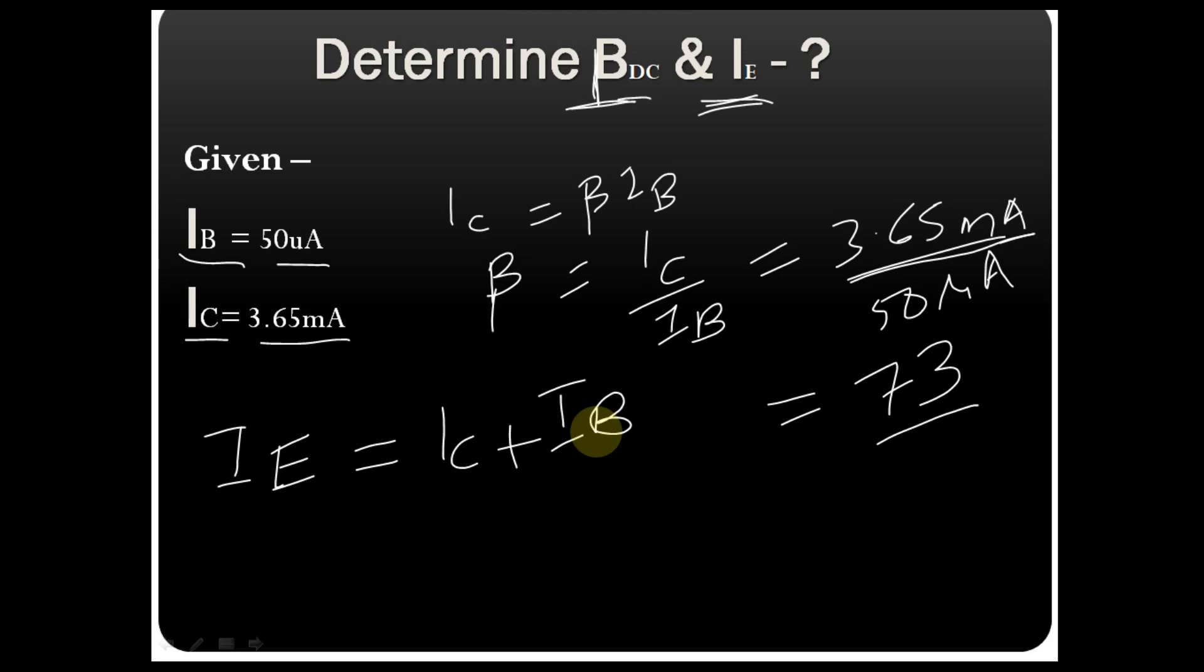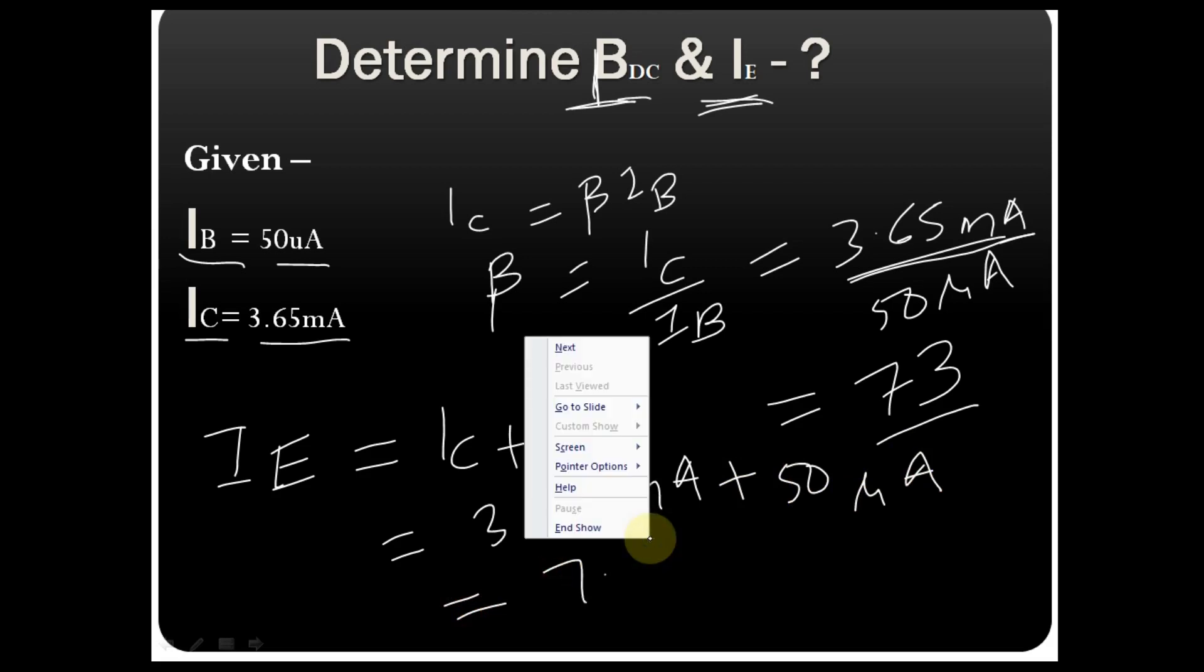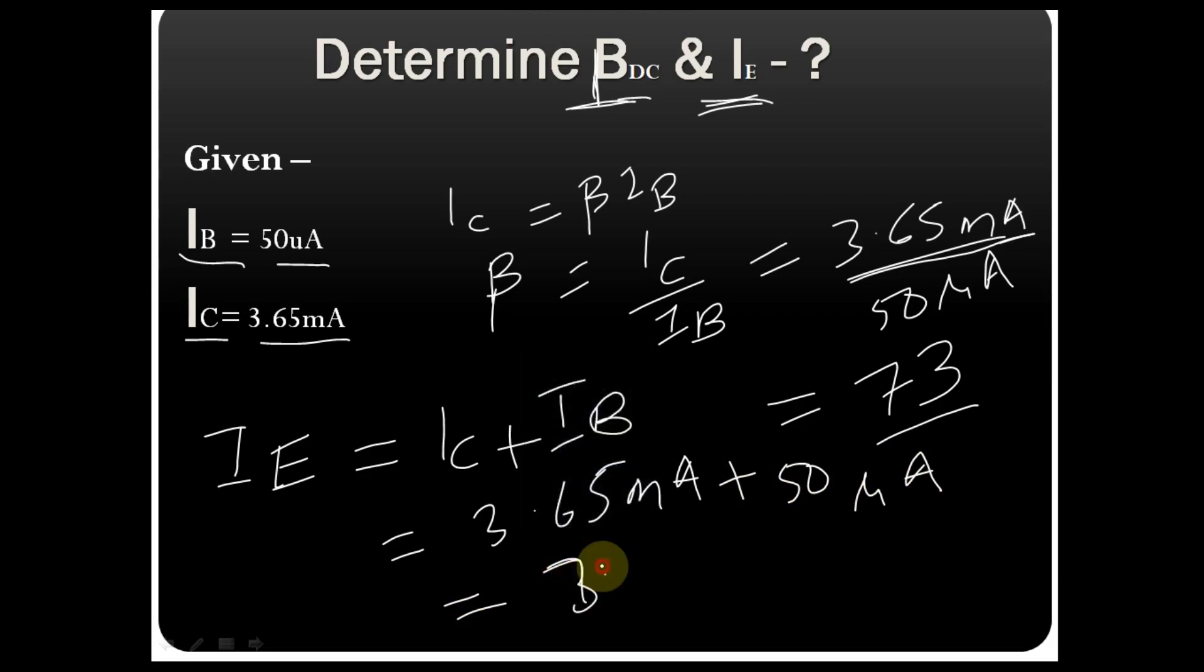You have the collector current which is 3.65 milliampere and the base current which is 50 microampere. If you solve this, you can find the value of IE equals 3.7 milliampere.